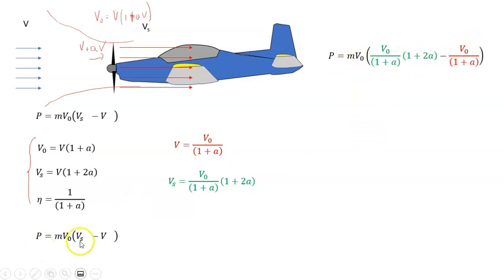I'm going to take both of these and substitute them into our power equation. Vs is V₀/(1 + a) × (1 + 2a)—I think I said that wrong—so it's V₀/(1 + a) × (1 + 2a)